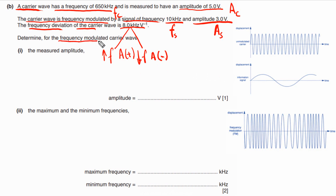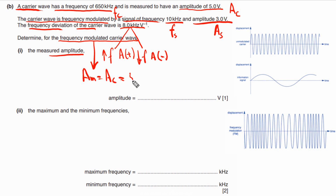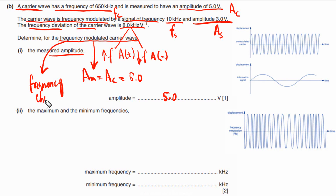We need to find the amplitude of the frequency modulated carrier wave. For a frequency modulated wave, only the frequency changes — the amplitude remains constant. Therefore, the amplitude of the FM modulated wave equals the amplitude of the carrier wave, which is 5.0 V.